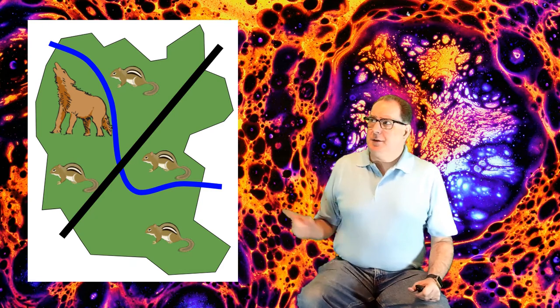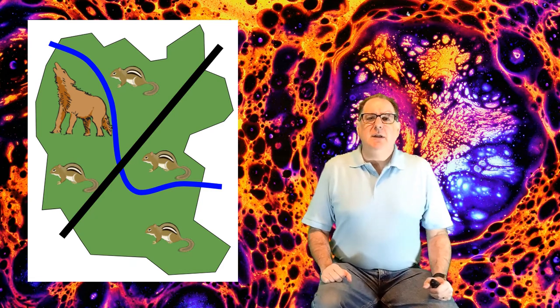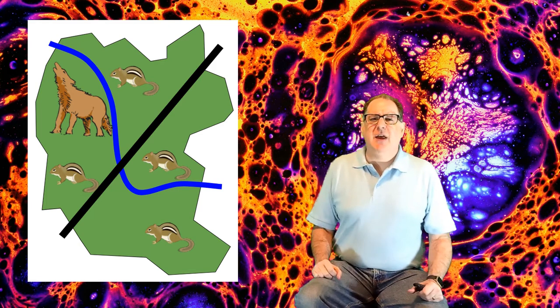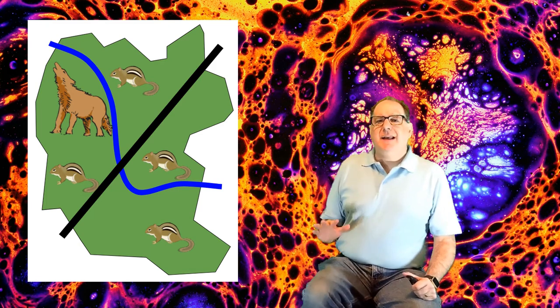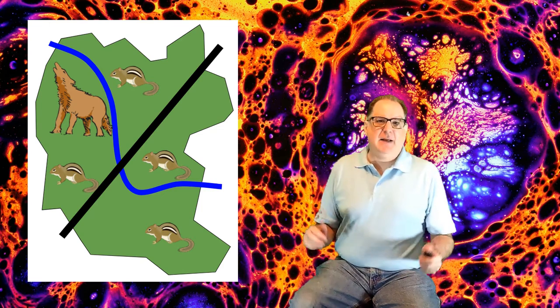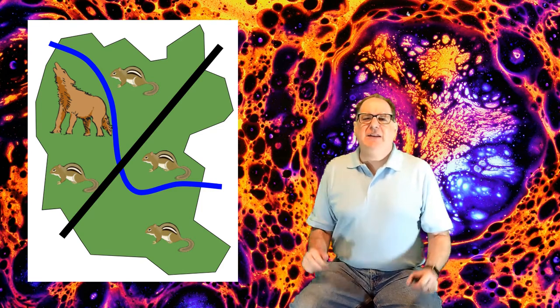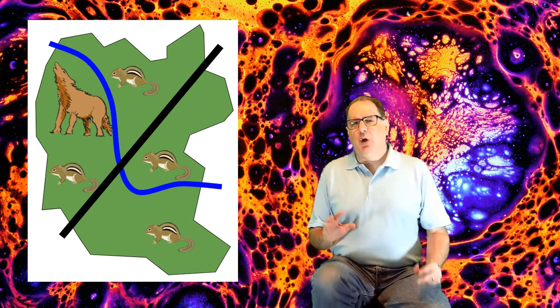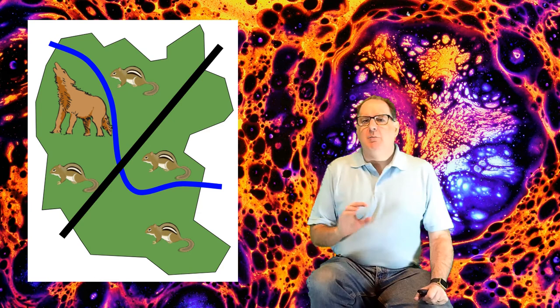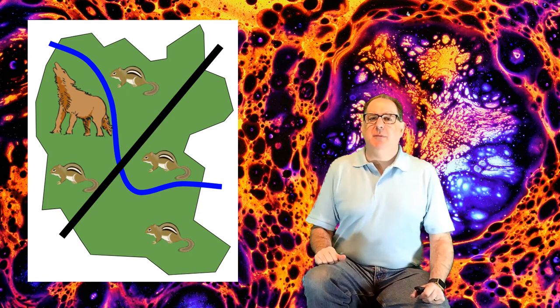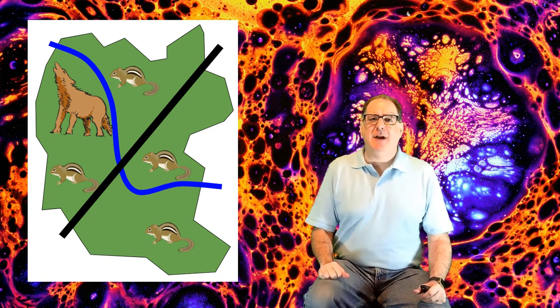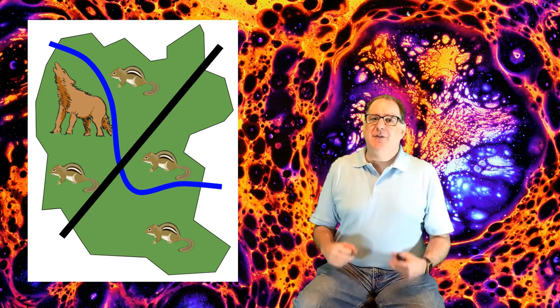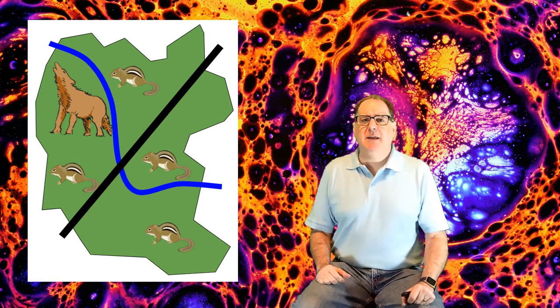The predator, the coyote, eats the chipmunks that it can find most easily. Some of the chipmunks have a variation that helps them survive, an adaptation. Let's say it smells and tastes bad. Over time, more of the population of chipmunks in the coyote habitat fragment have bad odor and taste because the adaptation will spread through the population.